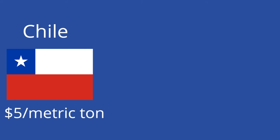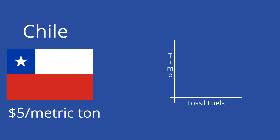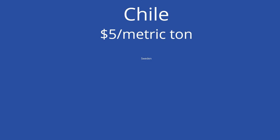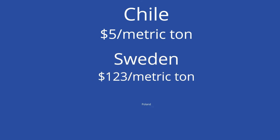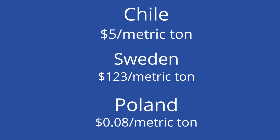Carbon taxes are already in place in various countries. For every metric ton of carbon dioxide released in Chile, there is a $5 fee, which predominantly affects energy companies. Projections predict that this tax will decrease fossil fuel generation in Chile 30% from 2007 levels by 2030 and grow the country's renewable energy industry. However, carbon taxes range greatly from country to country. In Sweden, the carbon tax is $123 per ton of carbon dioxide produced, whereas in Poland, the tax is only $0.08 per ton.